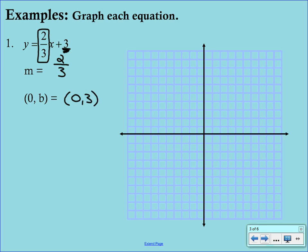To graph this line, I plot the y-intercept, so I'm going to put (0, 3) on the graph. Make sure that your y-intercept goes on your y-axis. You should always be starting on the vertical axis here.